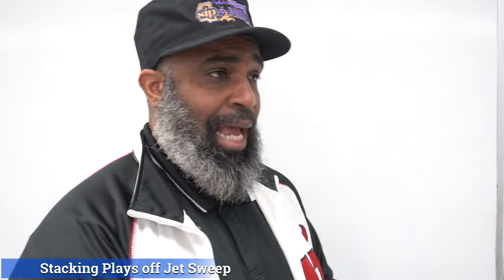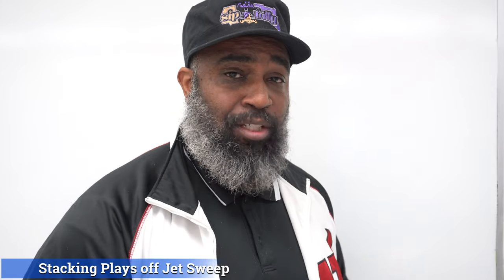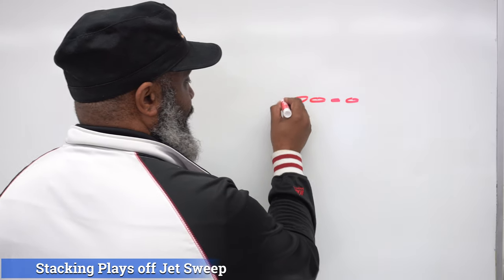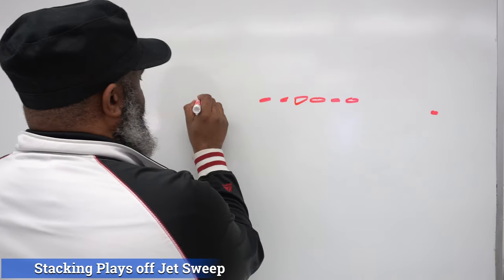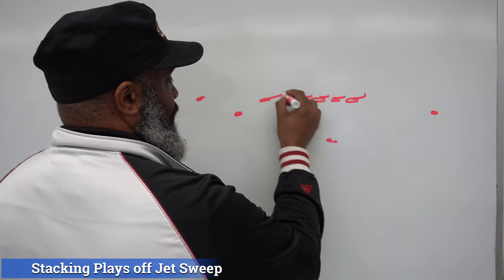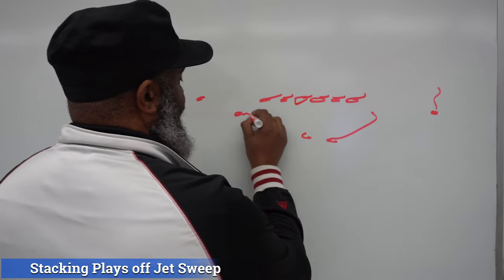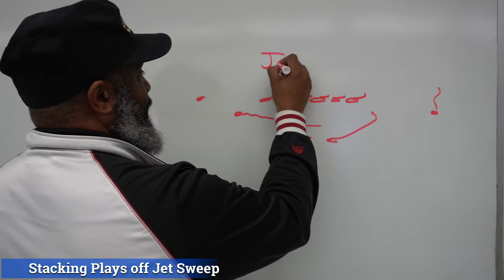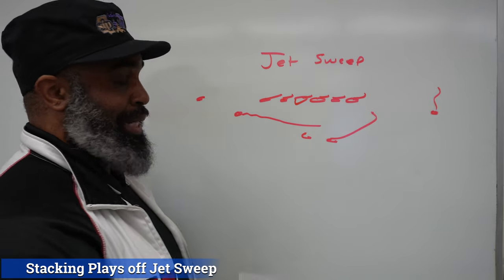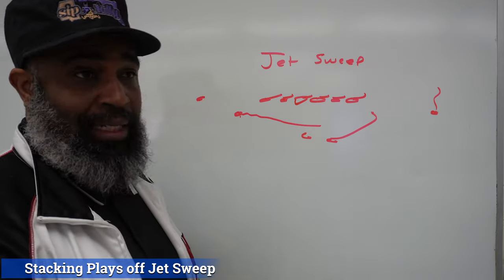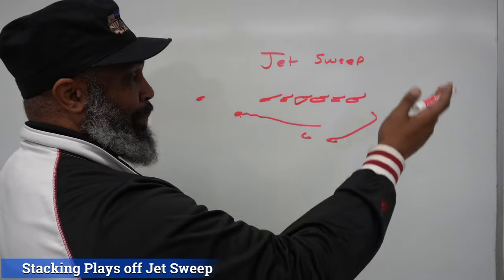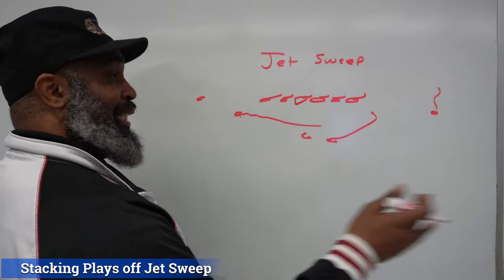Let's start with the basic jet sweep. The formation is going to stay the same but the plays will be different. I used 11 personnel because I think that's what the Ravens will be in a lot. Basic jet sweep — they'll run outside zone, the lead back will block that way, he'll come in motion, and it's a handoff. That'll be our base play. Nothing spectacular about that. That could be Flowers or anybody out of fast motion. Basic play: trying to get on the edge with blockers and outflank people.